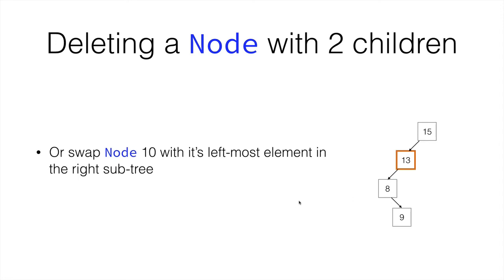Remember it is the rightmost element of the left subtree or the leftmost element in the right subtree. So either the rightmost element in the left subtree. This is the one that is furthest at the right. Or the leftmost element in the right subtree which in our case was 13.